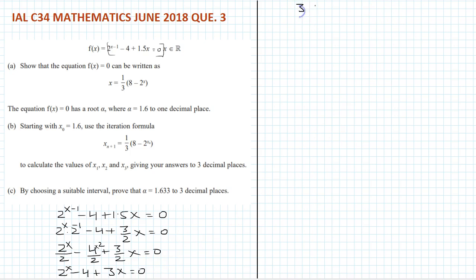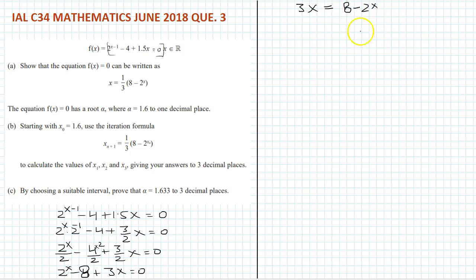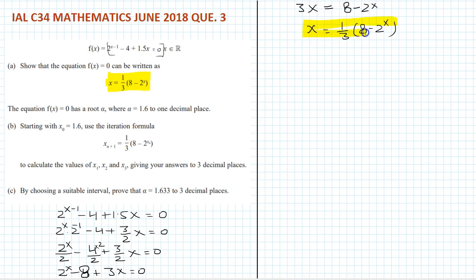So we can write: 3x equals — moving the terms across, 4 times 2 becomes 8, and the negative becomes positive — so 3x equals 8 minus 2 to the power x. Therefore x equals one third times (8 minus 2 to the power x). That is exactly what we are supposed to prove: x equals one third times (8 minus 2 to the power x).